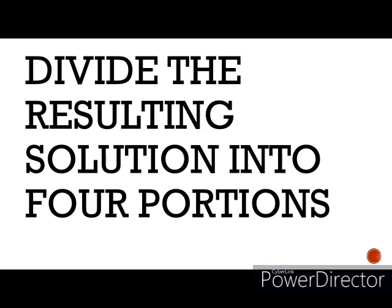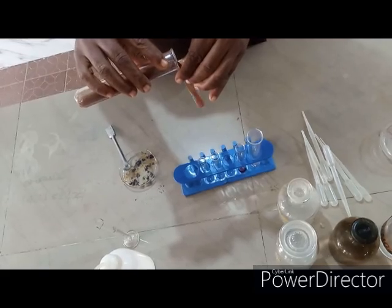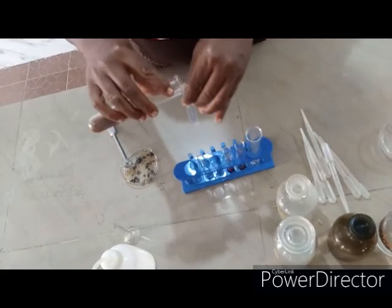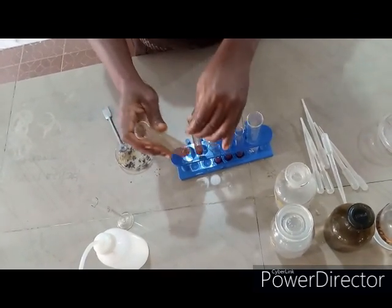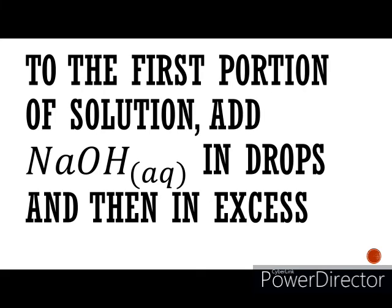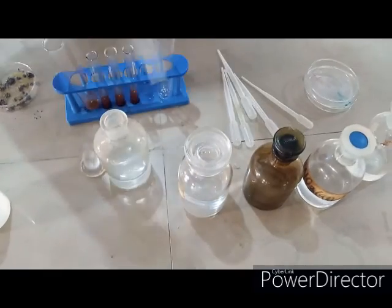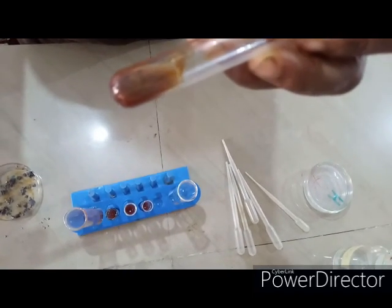Divide the resulting solution into four portions — this is the second portion, this is the third portion, and this is the fourth portion. Let's follow the instruction from the question. To the first portion of the solution, add sodium hydroxide in drops and then in excess. Tilt your test tube to see whether the precipitate is gelatinous or not. You can see that we have a reddish brown gelatinous precipitate.